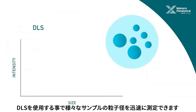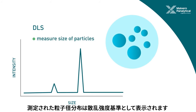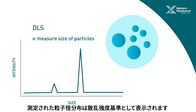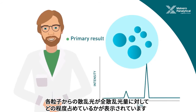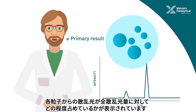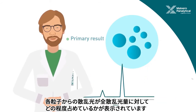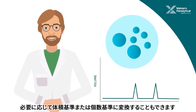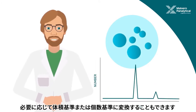Using DLS, we can quickly measure the size of all the particles in a sample. The size distribution measured is shown in this graph as an intensity distribution. This is the primary result, and it shows the intensity of scattered light from each size population present in the sample. These results can also be converted into a volume or number size distribution if needed.